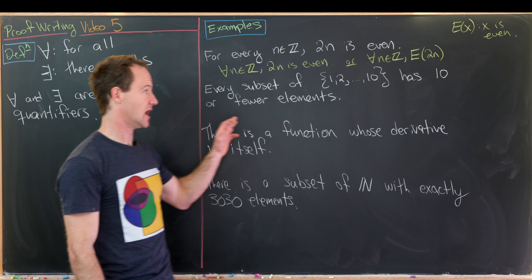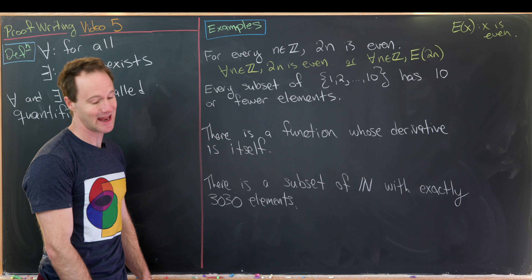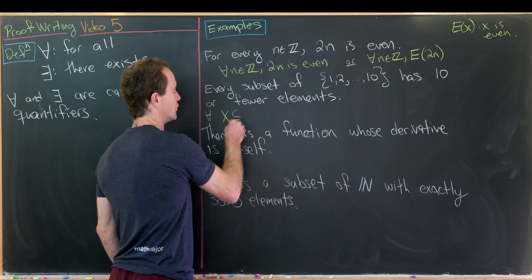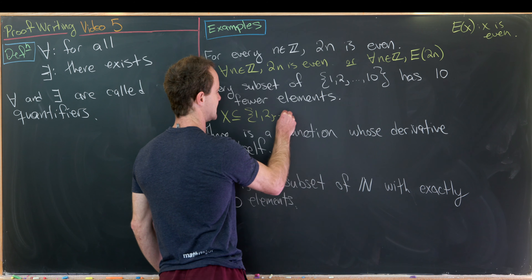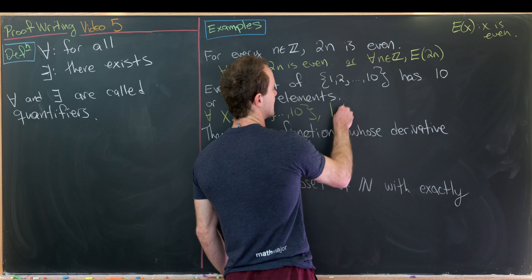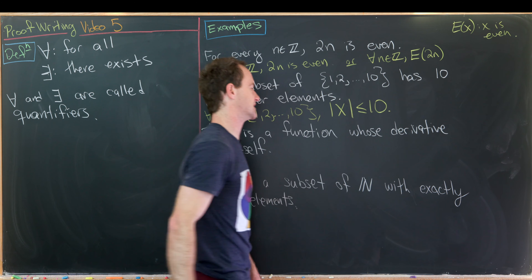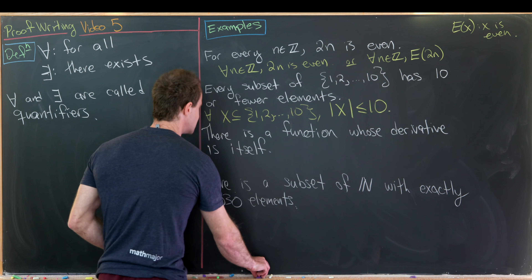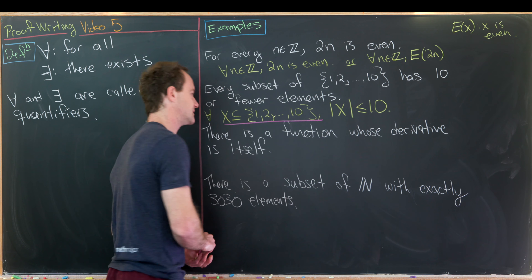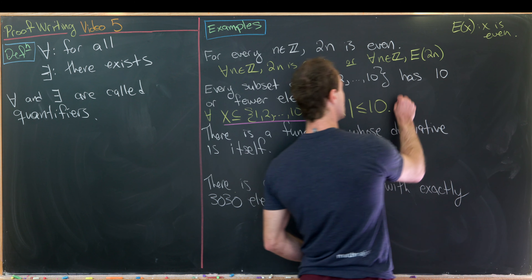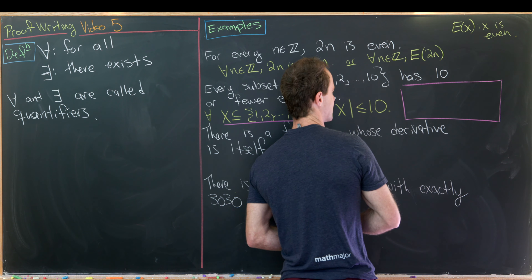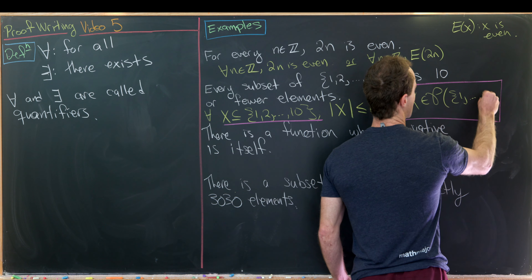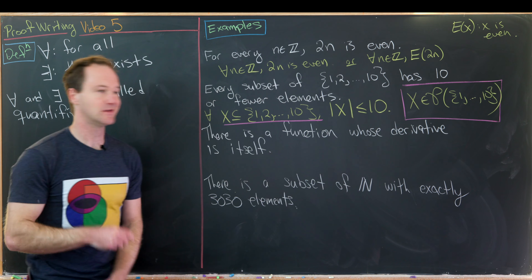The next example: every subset of the numbers between 1 and 10 has 10 or fewer elements. We write: for all x which is a subset of {1,...,10}, the cardinality of x is less than or equal to 10. Note that 'x is a subset of {1,...,10}' can be replaced with 'x is an element of the power set of {1,...,10}' — those are equivalent.